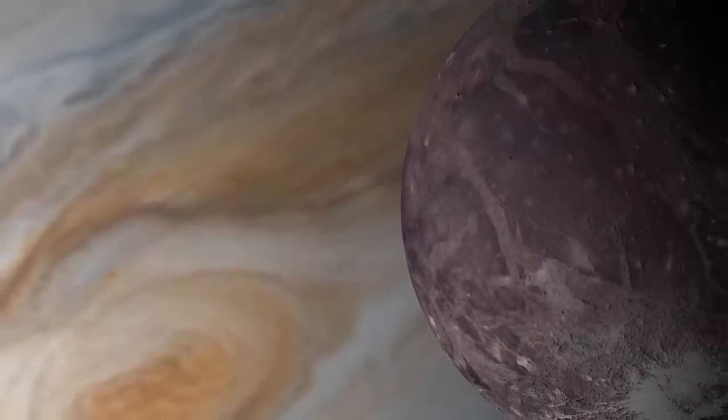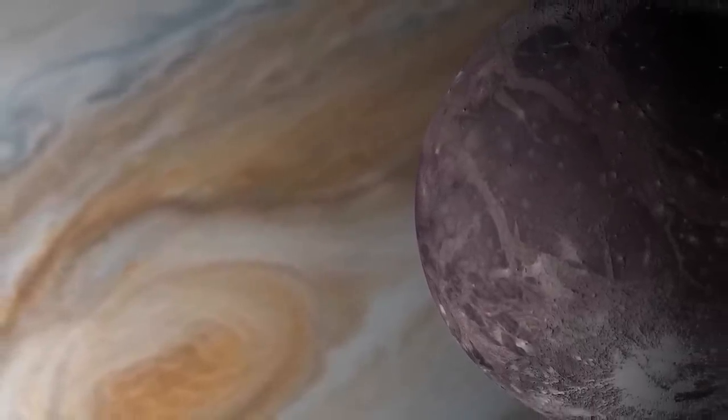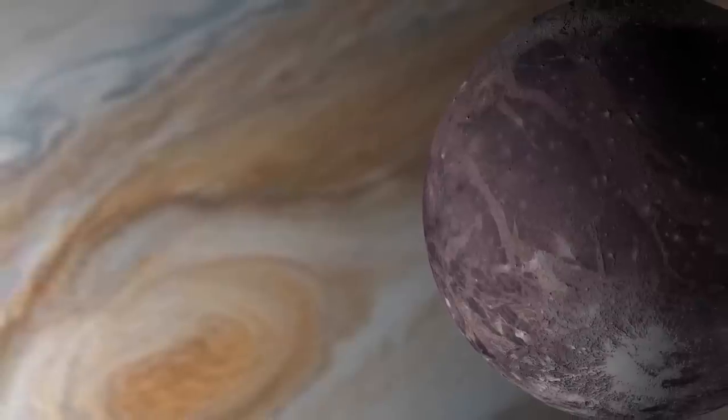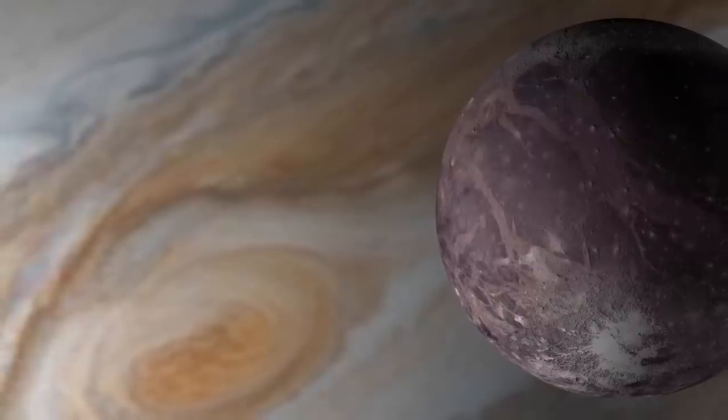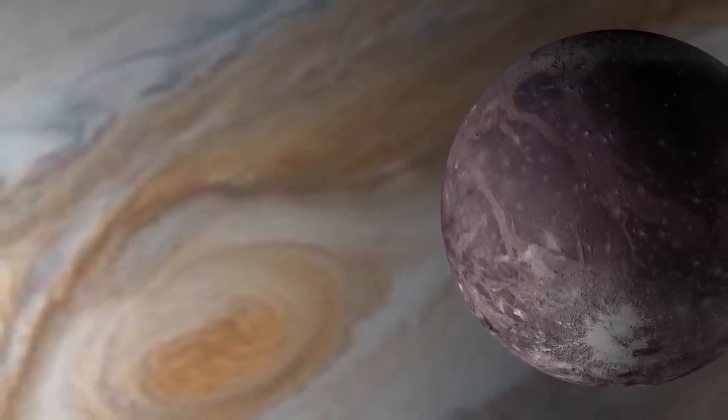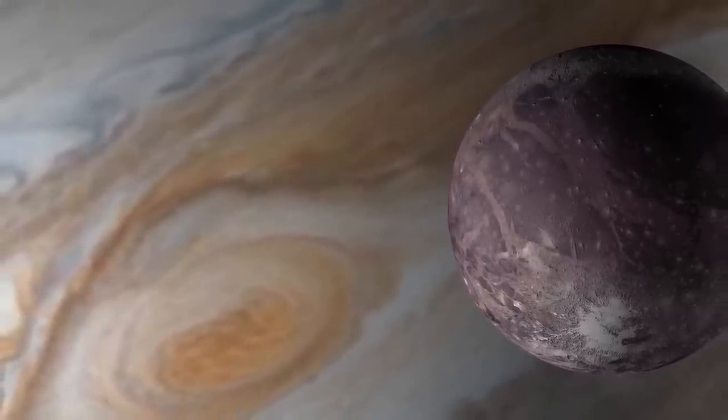Concerning Ganymede, its diameter of 5262 kilometers, or 3200 miles, makes it the largest Galilean moon. It is also the largest object from the sun exceeding the size of Mercury, and the brightest of the Galilean satellites.